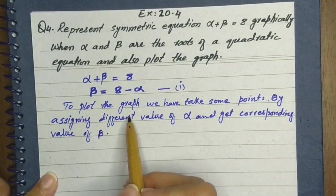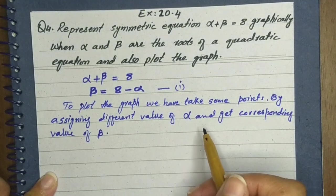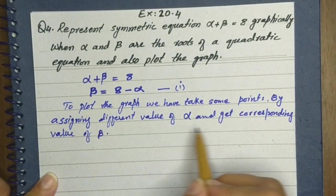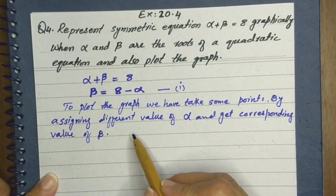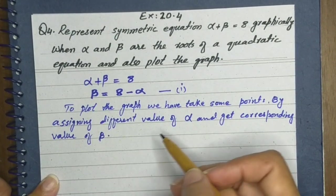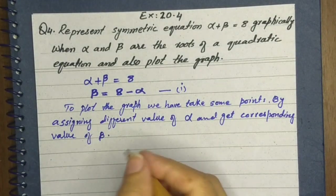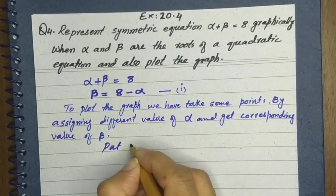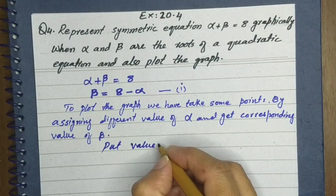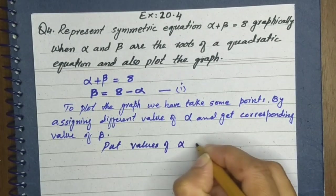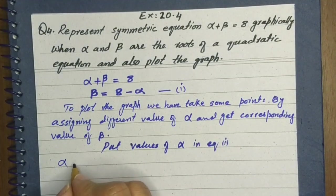Now we see it says to plot the graph. To plot the graph, we have to take some points by assigning different values of alpha and getting the corresponding value of beta. We will assign values to alpha and see what beta we get accordingly. Now we substitute values into Equation 1.